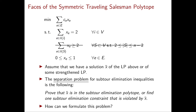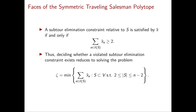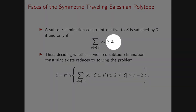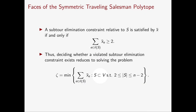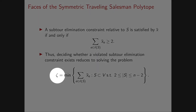The separation problem requires you to either prove that x̄ satisfies all the subtour elimination constraints, or find one subtour elimination constraint that is violated by x̄, so that you can add it to strengthen the LP at the next iteration. We will formulate this problem as a combinatorial optimization problem, similarly to what we saw for the knapsack cover inequalities. The subtour elimination constraint for a set S of nodes takes exactly this form, and deciding if there exists a violated constraint reduces to minimizing the left-hand side over all subsets S of V with cardinality between 2 and n-2.